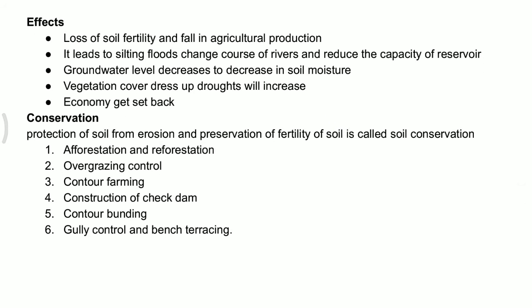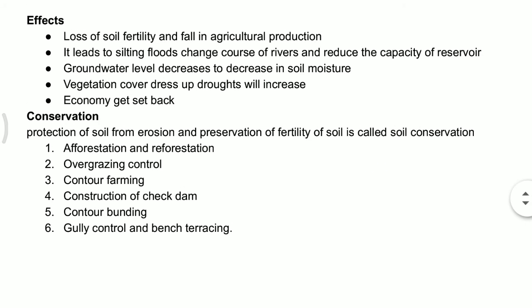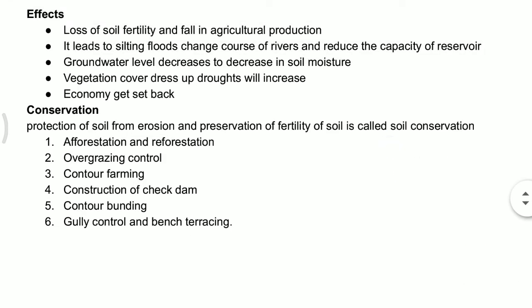Because of soil erosion, there is loss of soil fertility and a fall in agriculture production — this is a very important effect. Fertility decreases, leading to low yield and low agriculture production. Because of soil erosion, it also leads to silting, floods, and even rivers can change their course direction.